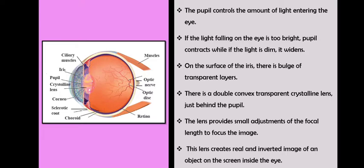There is a double convex transparent crystalline lens just behind the pupil. So this is the lens. Before that, there is the pupil. Ahead of that, there is the fleshy screen called the iris. And just outside, the eye is covered with the cornea, a very thin membrane.